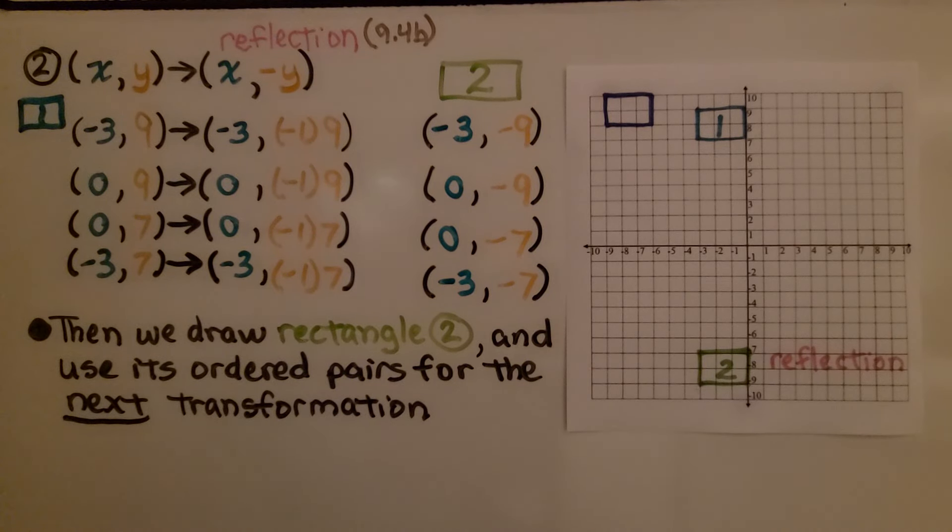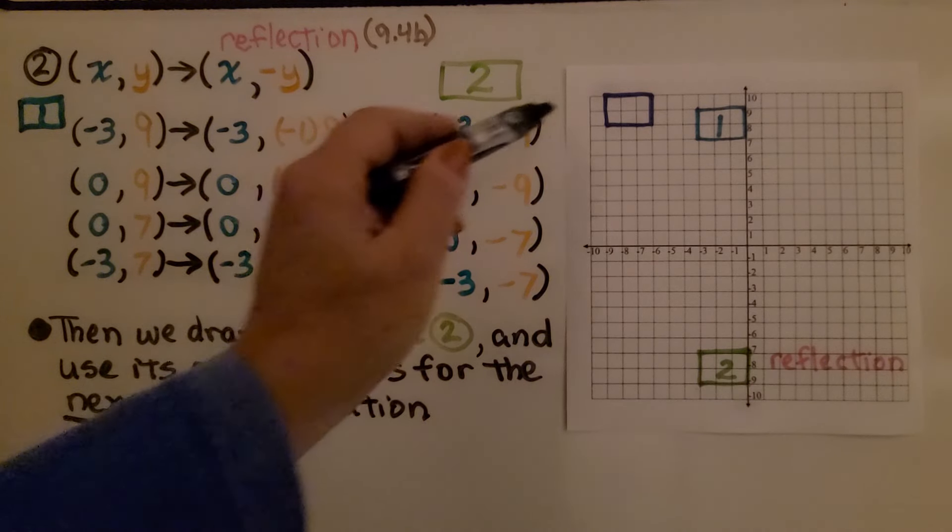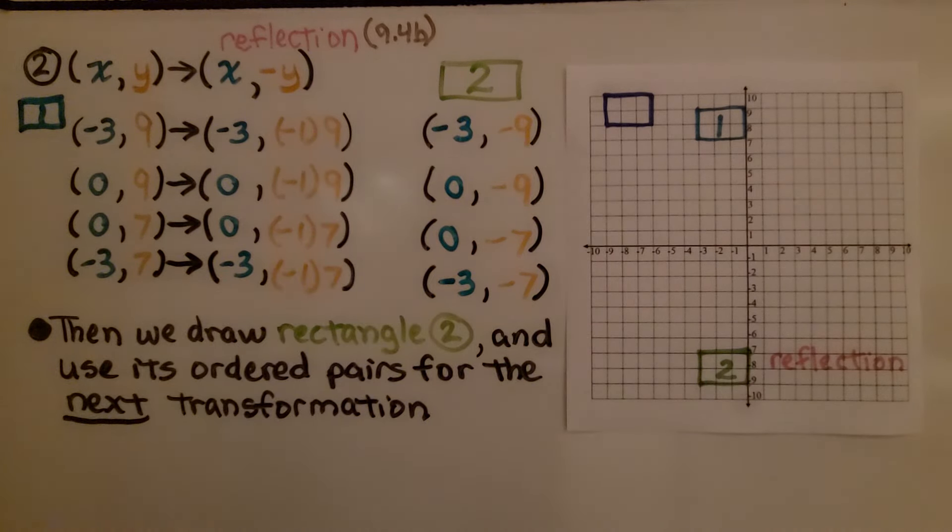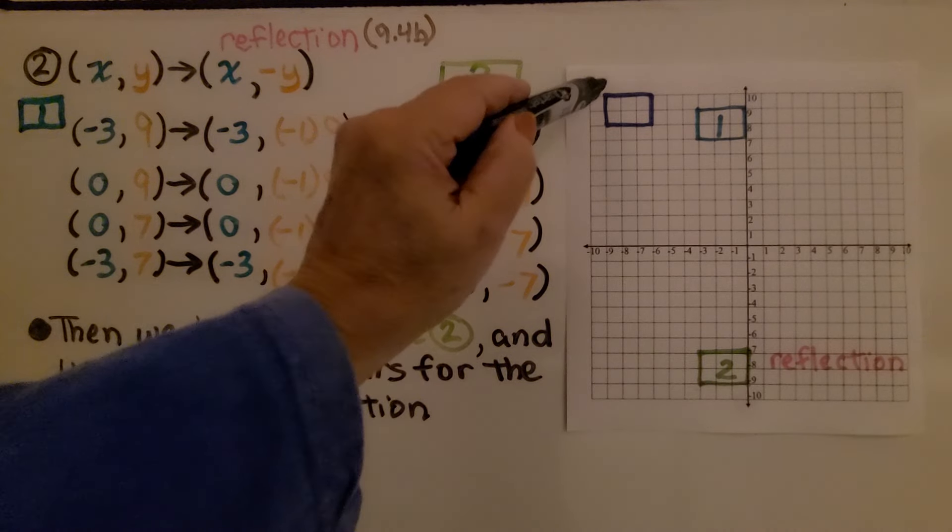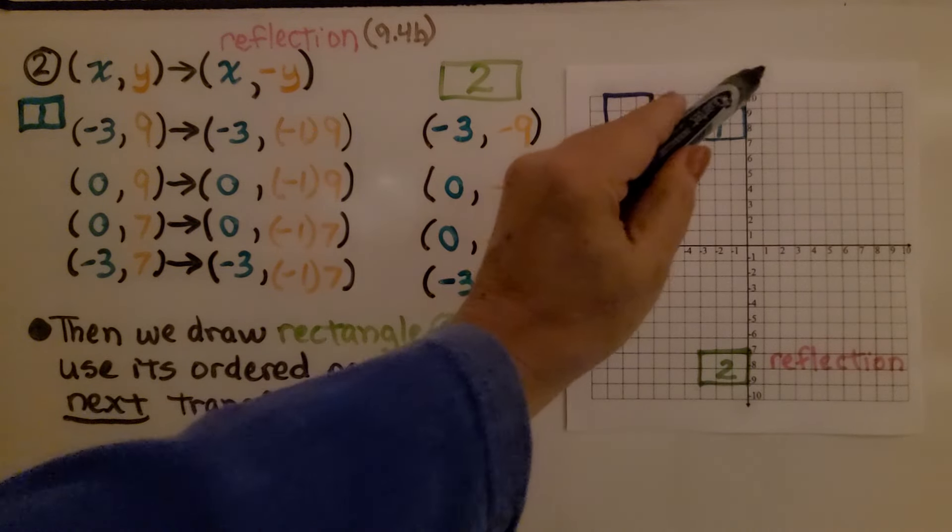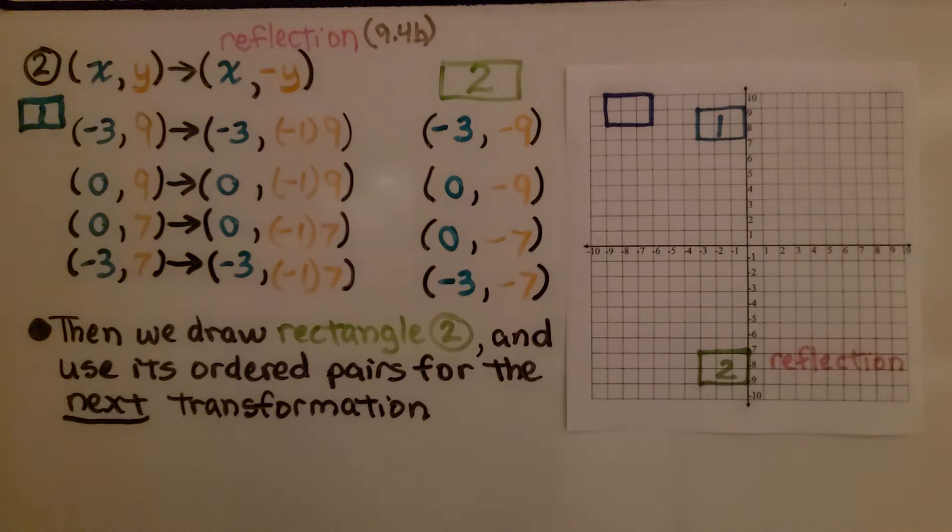Now as you're doing all these transformations in this sequence, it may get confusing which ordered pair goes to which vertex. If you want to mark a, b, c, d, and a prime, b prime, d prime, c prime, and so on with the tick marks, that's okay.